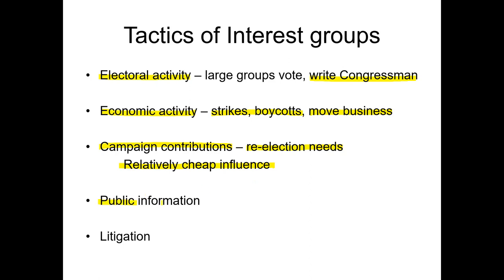Public information campaigns are another tactic — interest groups can put out advertisements, do commercials, have rallies, and do all kinds of things to get information out that local or even federal government will have to pay attention to. Litigation is another tactic used by groups such as the NAACP and the ACLU, which go through the courts to try to influence government through case law and anti-discrimination cases.